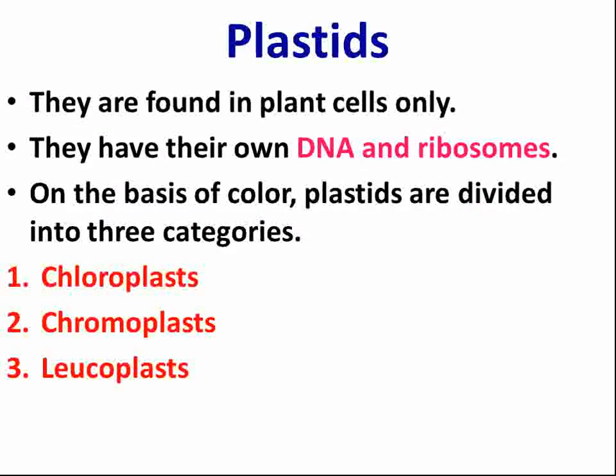The next organelle is plastids. Plastids are cell organelles found distributed inside the cytoplasm and are found only in plant cells, not in animal cells. They have their own DNA and ribosomes, making them semi-autonomous organelles. On the basis of color, plastids are divided into three categories: chloroplast, chromoplast, and leucoplast.